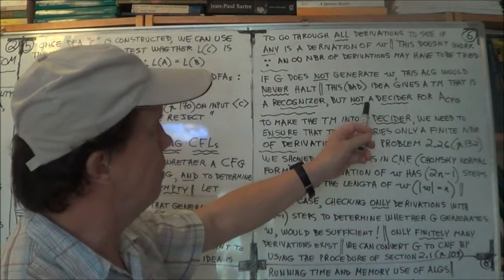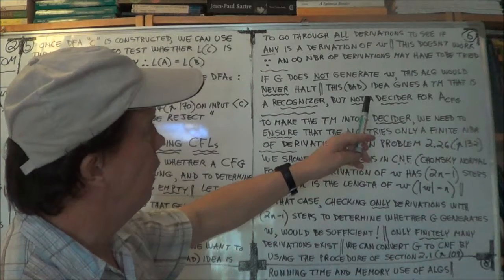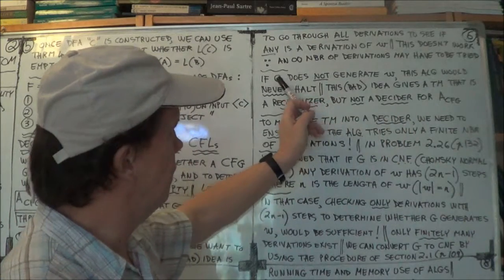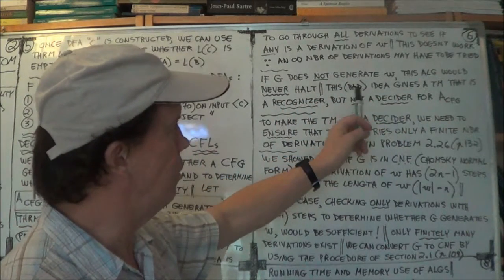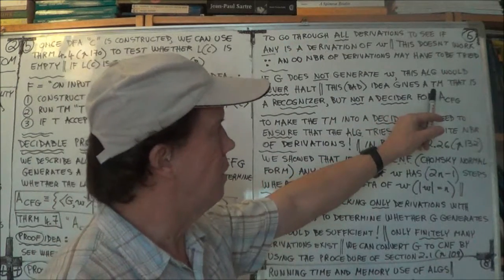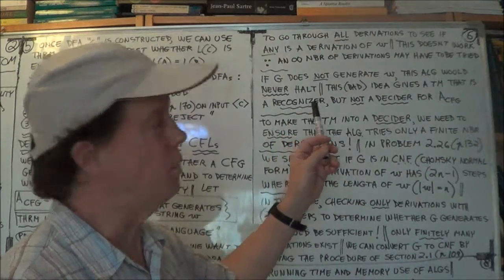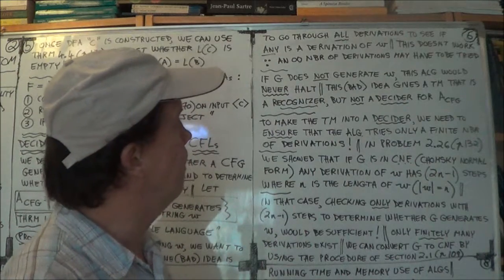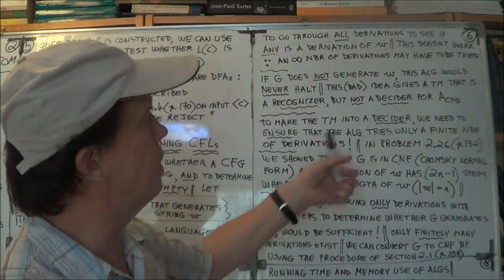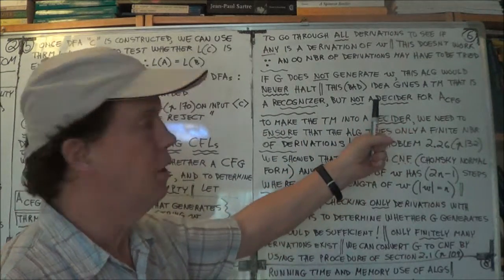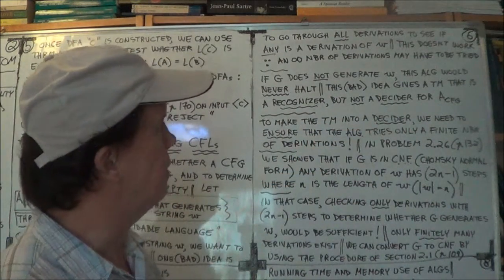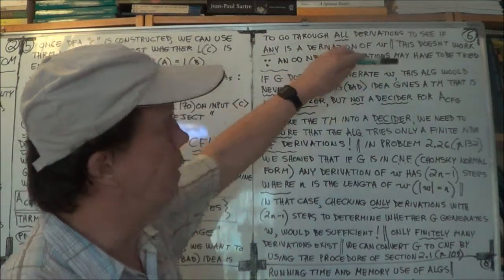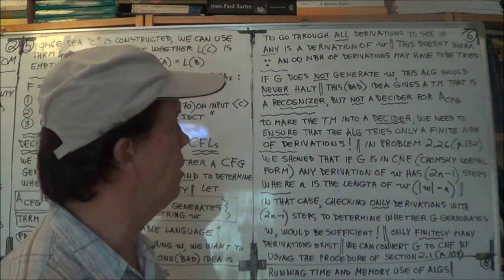Decider is our Turing machines that halt, right? They either accept or reject, but they don't loop, they don't go on forever, right? So that's not a good idea. Now, if the grammar does generate W, then you could use this idea to recognize, and the Turing machine is a recognizer. In other words, the Turing machine would find that derivation. And hence it would recognize the language, but it wouldn't be a decider. Okay? Because it can't reject, because you may have an infinite number, and so it would just never halt. So that's not a good idea.